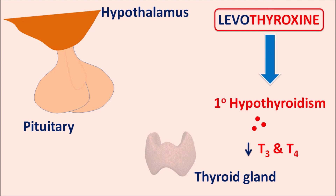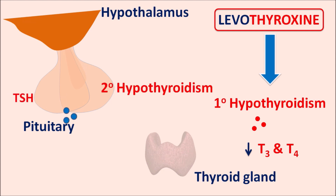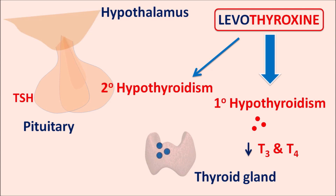Sometimes the pituitary gland may have dysfunction, resulting in secondary hypothyroidism. In this condition there is decreased release of thyroid stimulating hormone (TSH), and when TSH is insufficiently released it leads to decreased thyroid hormone release. Levothyroxine can be given to control secondary hypothyroidism.